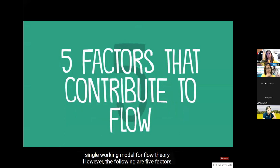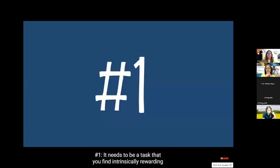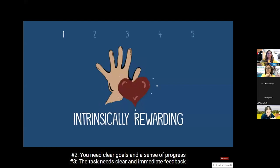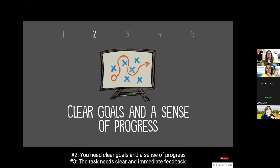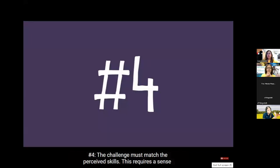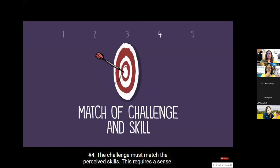[Video] Researchers do not have one single working model for flow theory, but there are a few vital factors. Number one: it needs to be a task you find intrinsically rewarding. Number two: you need clear goals and a sense of progress — it helps if you are setting the goals yourself. Number three: the task needs clear and immediate feedback — you need to know what you're doing and where you're going. Number four: the challenge must match the perceived skills, requiring a sense of personal control or agency over the task.